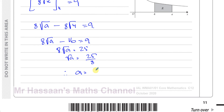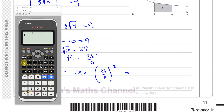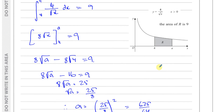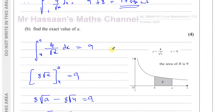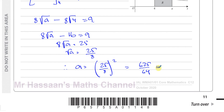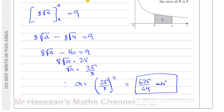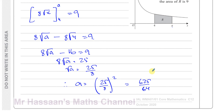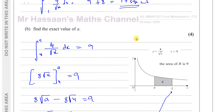Therefore a equals twenty-five over eight, all squared, which gives six hundred and twenty-five over sixty-four. They said find the exact value, so it's best to leave it in this form — no point rounding it to a decimal. So a equals six hundred and twenty-five over sixty-four. That's the value of a, not square units — it's just a number representing that x-coordinate such that when you integrate this expression between that number and four, it gives nine as the area.